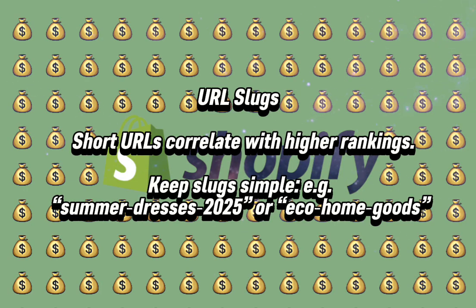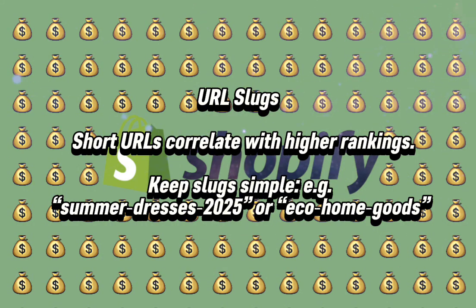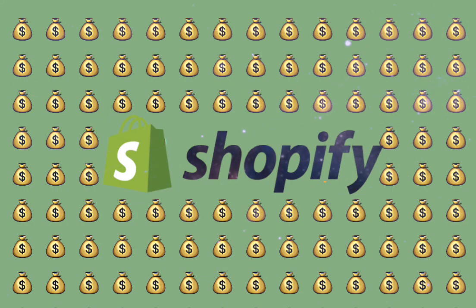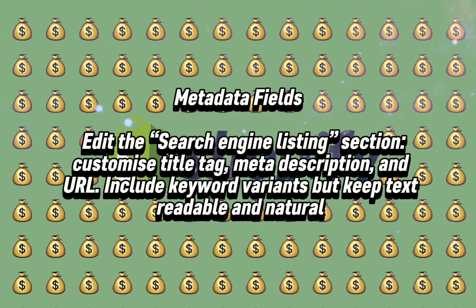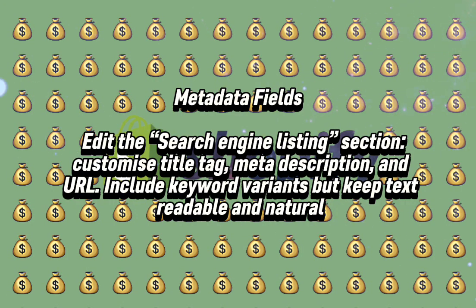URL Slugs: short URLs correlate with higher rankings. Keep slugs simple, such as 'summer-dresses-2025' or 'eco-home-goods.' Metadata fields: edit the search engine listing section to customize the title tag, meta description, and URL. Include keyword variants while keeping the text readable and natural.